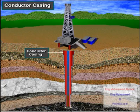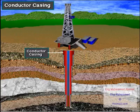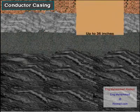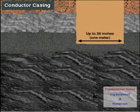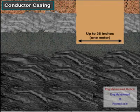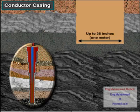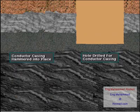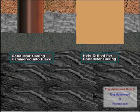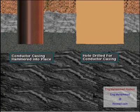The first string of casing is the conductor casing. The hole drilled for it is pretty big — often as much as 36 inches or more, almost a meter in diameter. The conductor hole has to start out pretty big because as drilling goes on, the hole's diameter decreases.